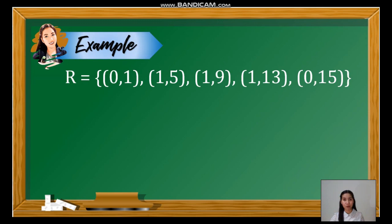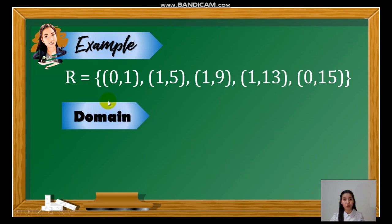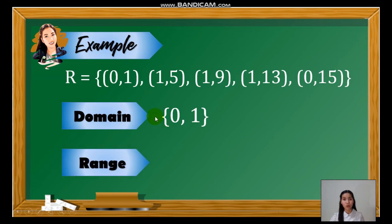Let us now have an example. Looking at the set of r, can we consider this as a relation? Yes, it is. It is a relation since it contains five ordered pairs showing the relationship of x and y. Let's now have the domain and range. For the domain, we have to look at the x values. So here we have 0, 1, 1, 1, 1, and 0. But take note that in writing the domain and even the range, we don't repeat the values. Therefore, the domain contains the values 0 and 1. For the range, we have to look at the y values: 1, 5, 9, 13, and 15. Since there are no y values being repeated, the range contains all of these values.